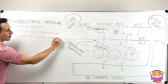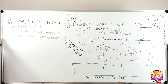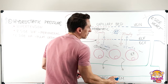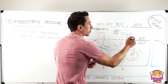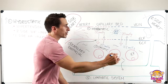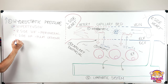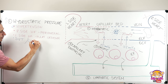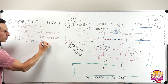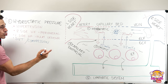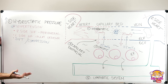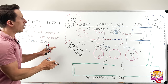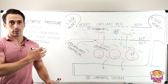Other causes of increased hydrostatic pressure include deep vein thrombosis — something blocking the vein so blood backs up — or compression of the vein, or obstruction of the inferior or superior vena cava. Compression, obstruction, or a DVT are the major causes of increased hydrostatic pressure resulting in oedema.